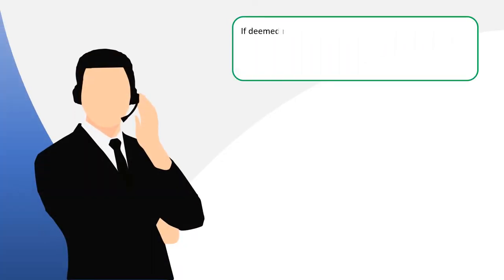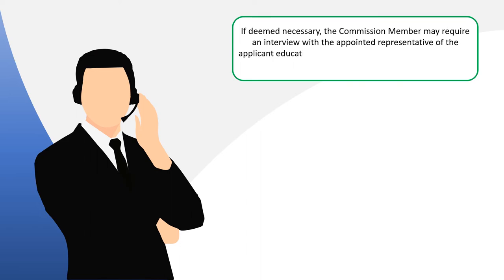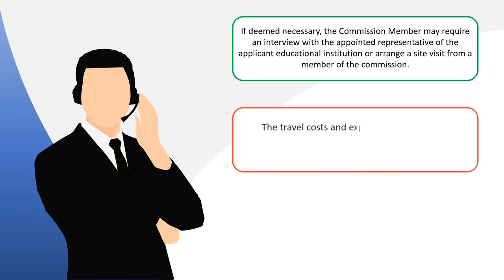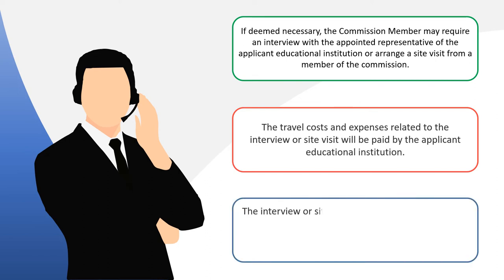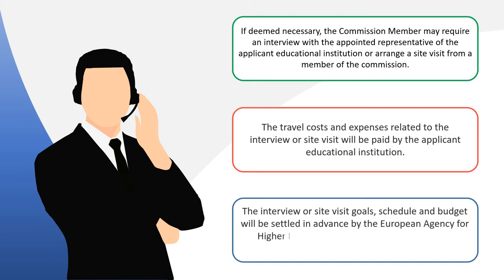Interview or site visit. If deemed necessary, the commission member may require an interview with the appointed representative of the applicant educational institution, or arrange a site visit from a member of the commission. The travel costs and expenses related to the interview or site visit will be paid by the applicant educational institution. The interview or site visit goals, schedule, and budget will be settled in advance by the European Agency for Higher Education and Accreditation secretary in consultation with the applicant.